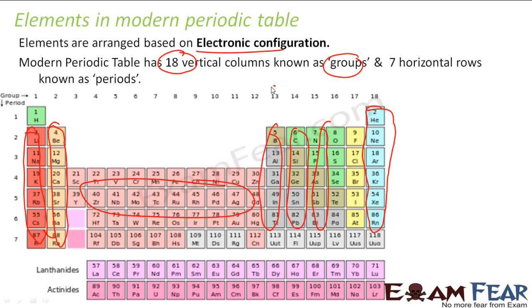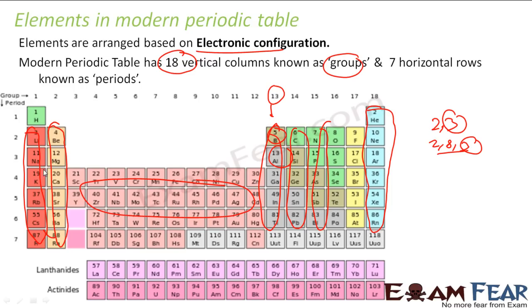For example, an element with configuration 2, 3 and aluminium with configuration 2, 8, 3 — both have three electrons in the valence shell, so they are in the same group. Similarly, beryllium is 2, 2 and magnesium is 2, 8, 2 — both have 2 valence electrons, so they are in the same group. That's why it is called a group.